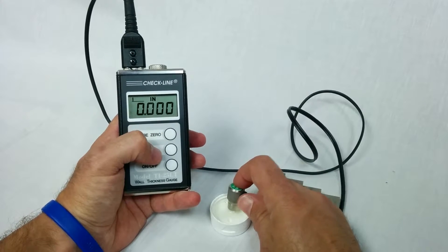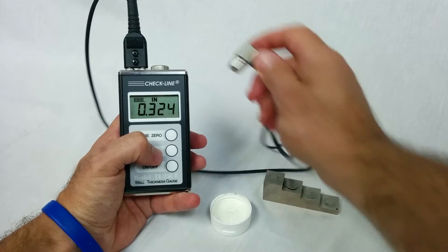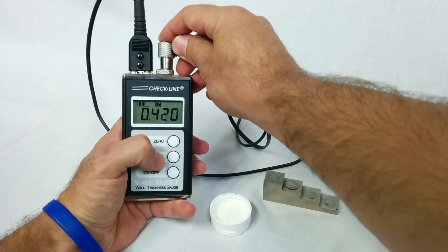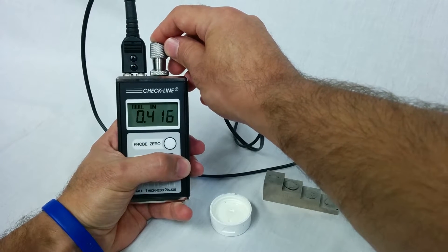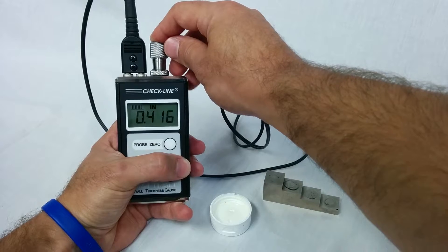Next I'm going to put some coupling gel on the transducer and press it against the battery cap. Then I'm going to press the Probe Zero key and it's going to reset the probe just like zeroing out a micrometer.